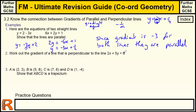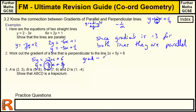Question 2: work out the gradient of the line perpendicular to the given line. First, rearrange the equation to y equals form by taking the x term to the other side to get minus 2x plus 6, then divide by 5 to get y equals minus two fifths x plus six fifths. The gradient is minus two fifths. The perpendicular gradient is the negative reciprocal: change the sign and flip the fraction, giving positive 5 over 2.